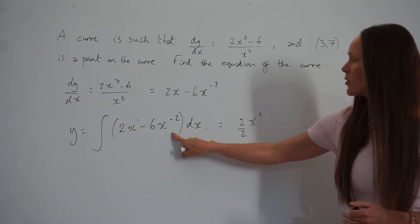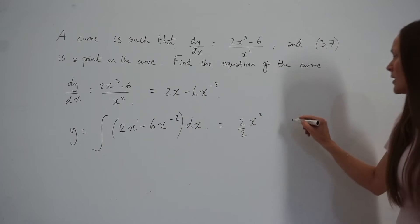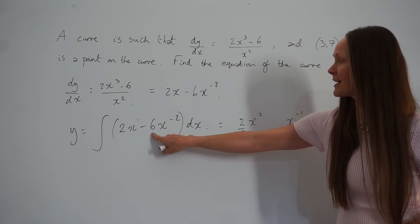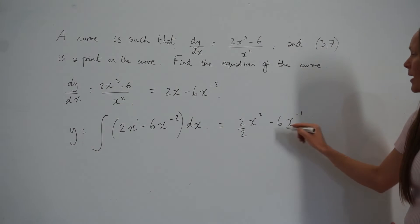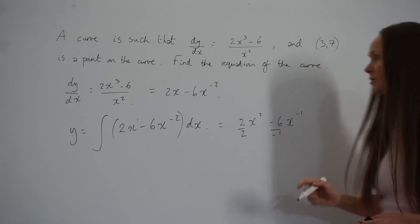Then this term, the power is -2. If I add 1, I get -1, so x to the power of -1. And we're dividing -6 by the new power, which is -1. Then remember, you need to add your constant c.